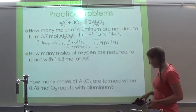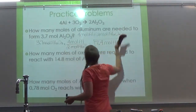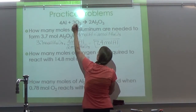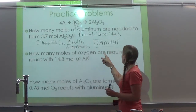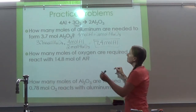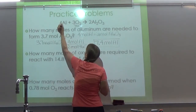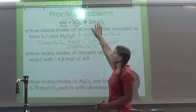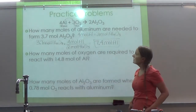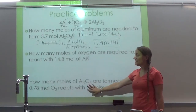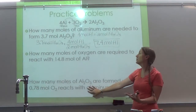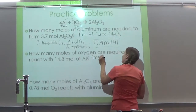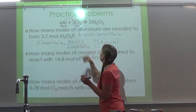I'm going to erase what's on my reaction because we're doing a new problem. The problem says: how many moles of oxygen are required to react with 14.8 moles of aluminum? So I'm going to put a question mark for moles of oxygen. We're going from aluminum to oxygen, so we don't care about our product at all this time. Let's write out our conversion factor. We have four moles of aluminum — from my coefficient — equals three moles of oxygen — again from my coefficient.